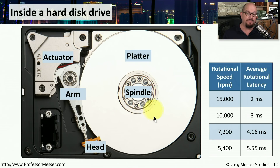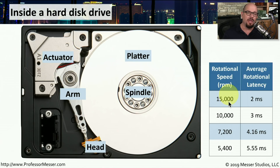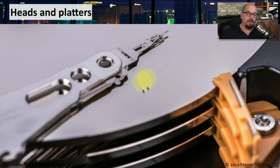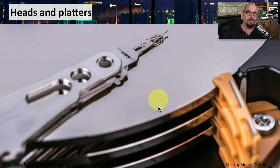If the drive is rotating faster — for example at 15,000 rotations per minute — then the rotational latency becomes shorter. For a data center, we're probably going to use rotational speeds that are as fast as possible, but for desktop or laptop computers, we may choose hard drives with a slower rotational speed that cost a bit less. Here's a close-up of the platters, the actuator arm, and the head at the end of that arm, moving back and forth quickly over the platter to retrieve the information you're requesting.